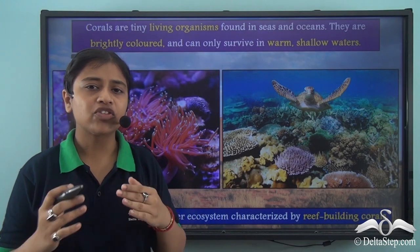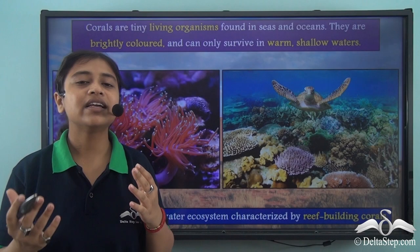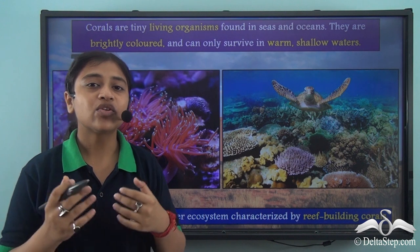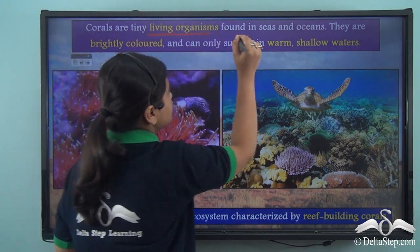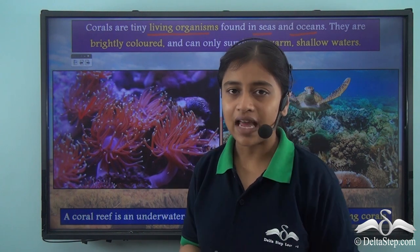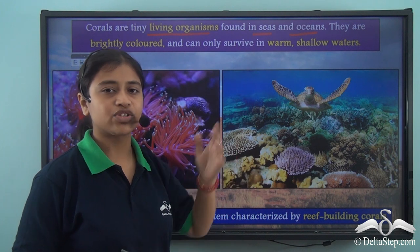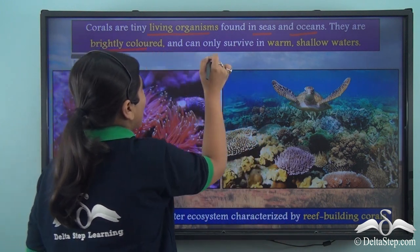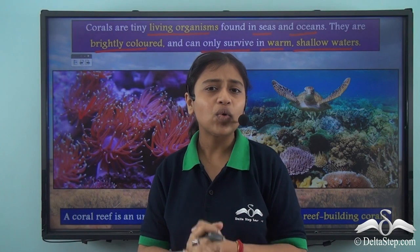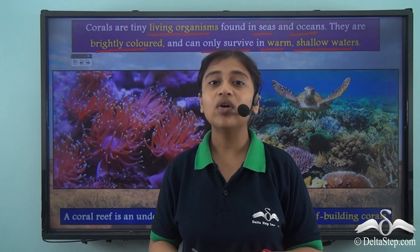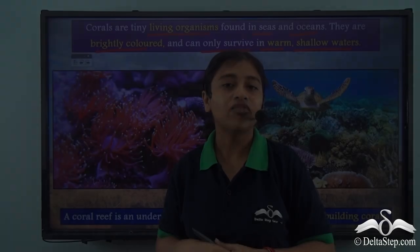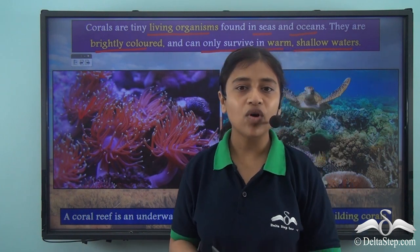To understand why it is called the Great Barrier Reef, we must understand what corals are. Corals are tiny living organisms found in seas and oceans. They are brightly coloured and can only survive in warm, shallow waters. In deep waters they cannot survive due to the lack of oxygen, and silt deposits in the lower portions of the water body may also clog the pores of these corals, causing them to die.